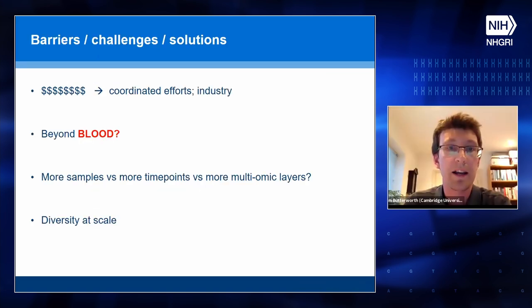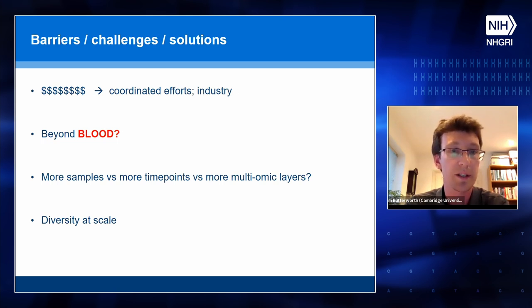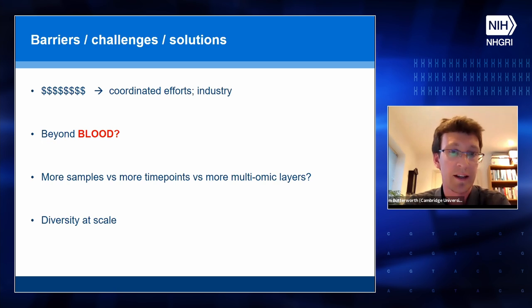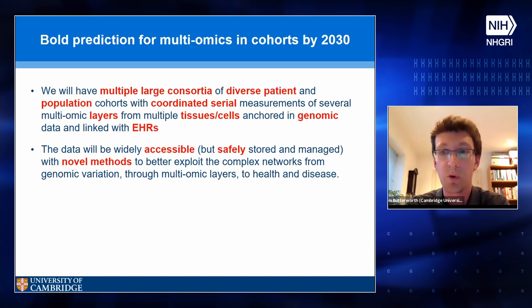On barriers: clearly the cost of genome sequencing has come down dramatically but not yet for proteins and metabolites in the same way, so coordinated efforts to make these scalable and drive the cost down are needed. Much of our omics was funded by industry, so partnering there is going to be important. Going beyond blood is a challenge — we're getting a snapshot with peripheral blood, but often the action is somewhere else and we don't know how blood relates to the tissue we're interested in. There's also the question of where to prioritize: is it more samples, more time points, or more layers? And finally, how do we ensure we get diversity at scale — diversity that's not tokenistic but sufficiently powered to tell us something?